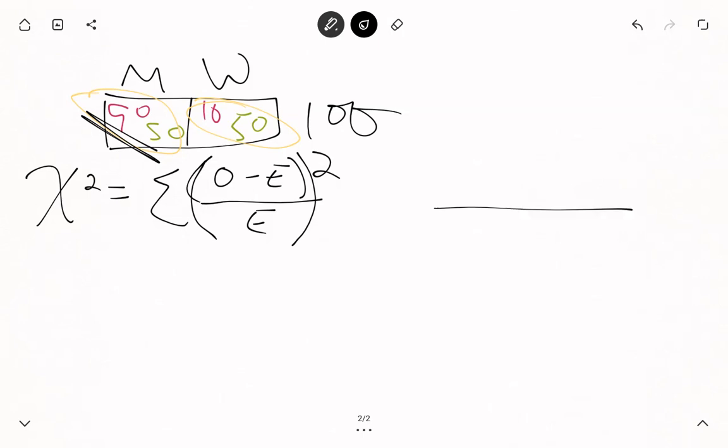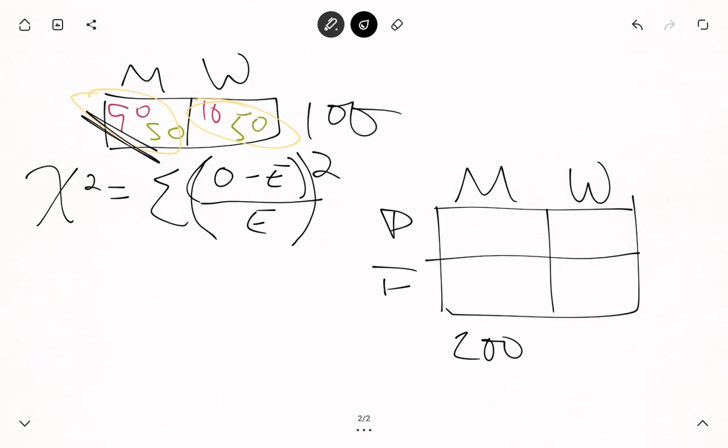Now we can talk about what happens when we are doing two variables. So let's continue with men and women, but then we can look at something like pass-fail. Let's say that we have 200 men and 100 women.